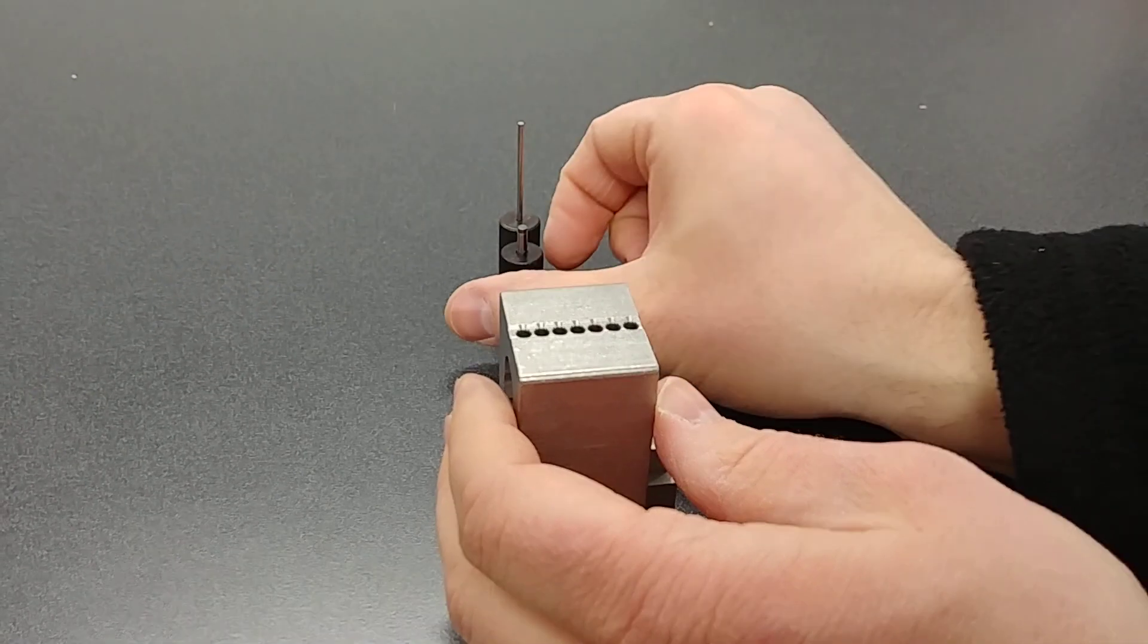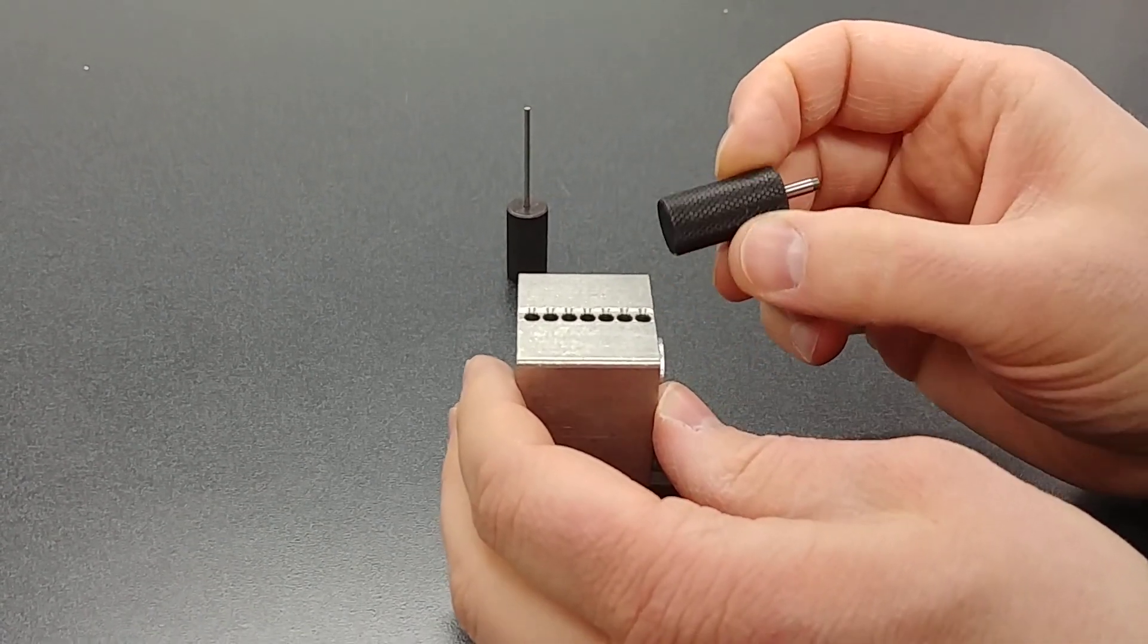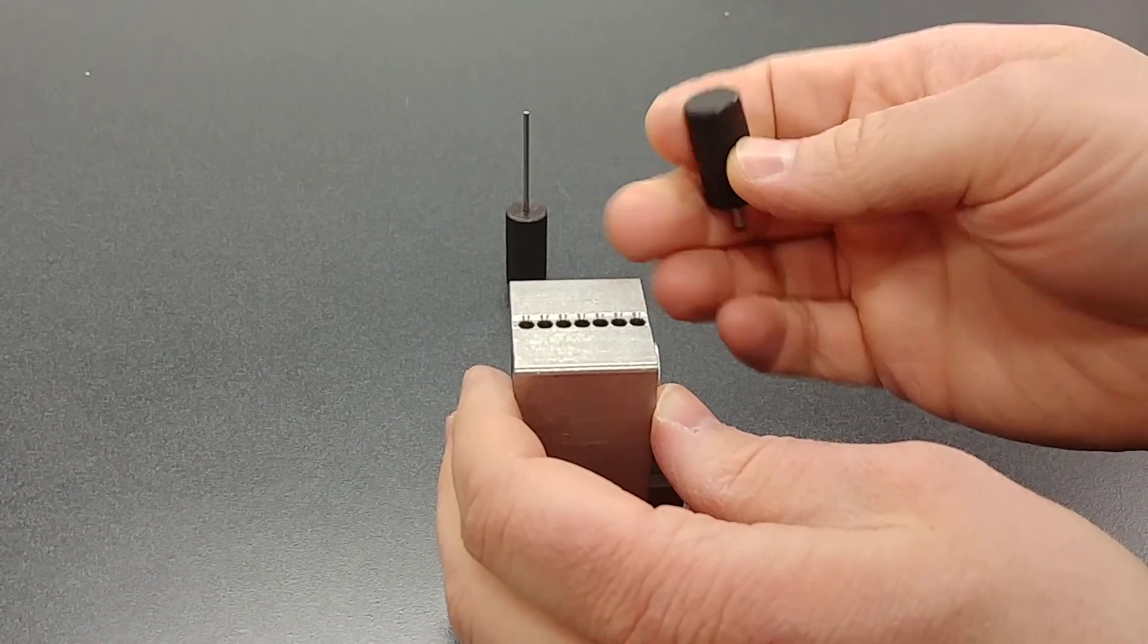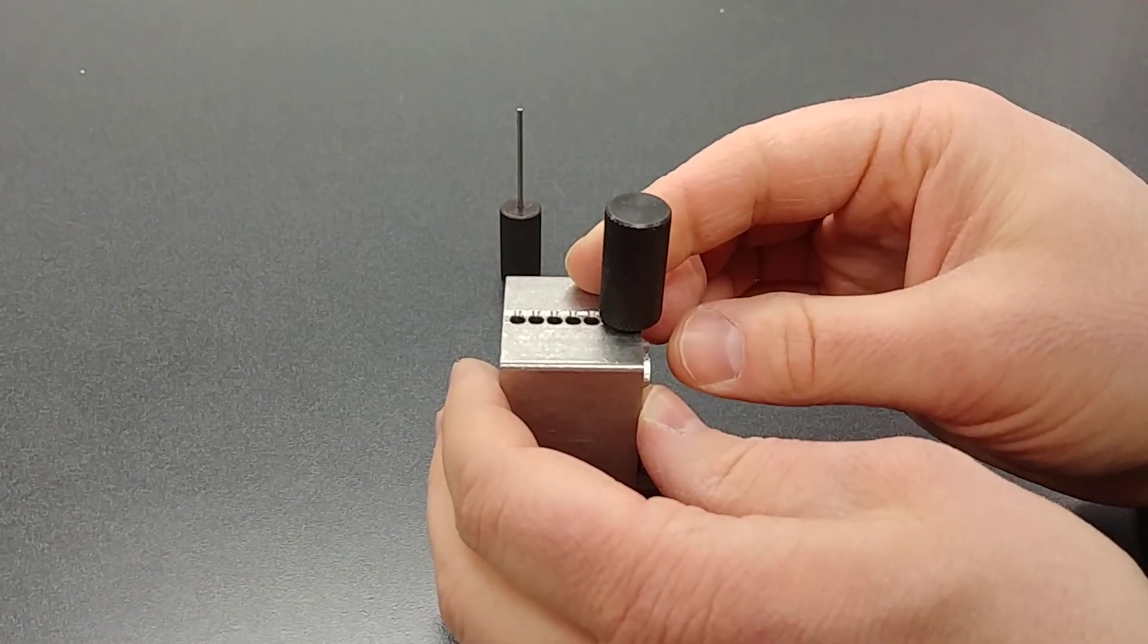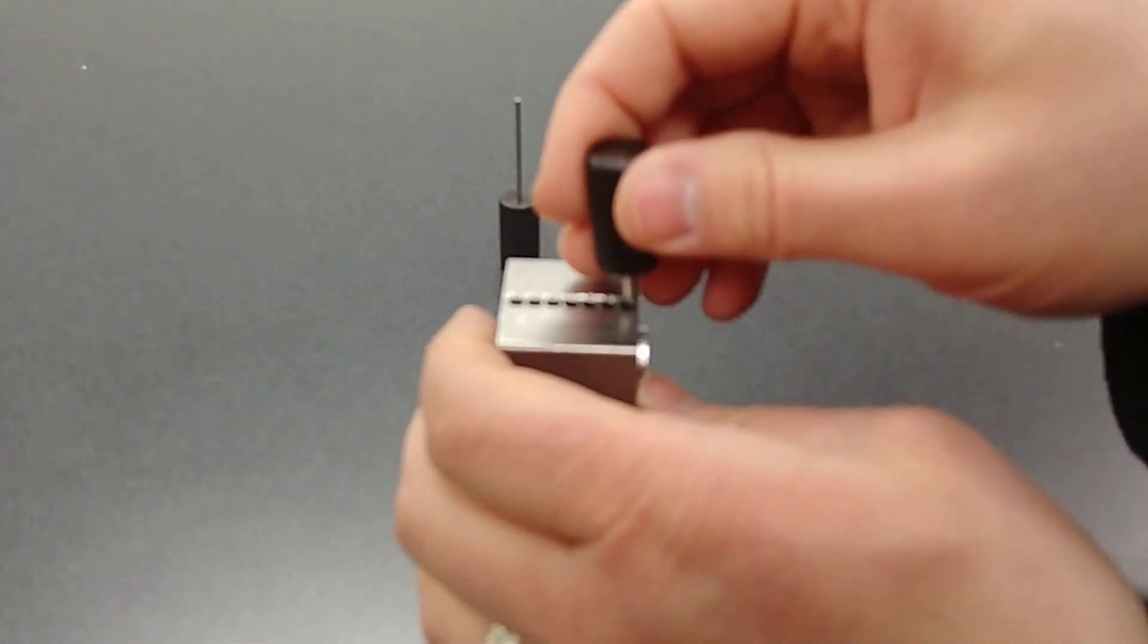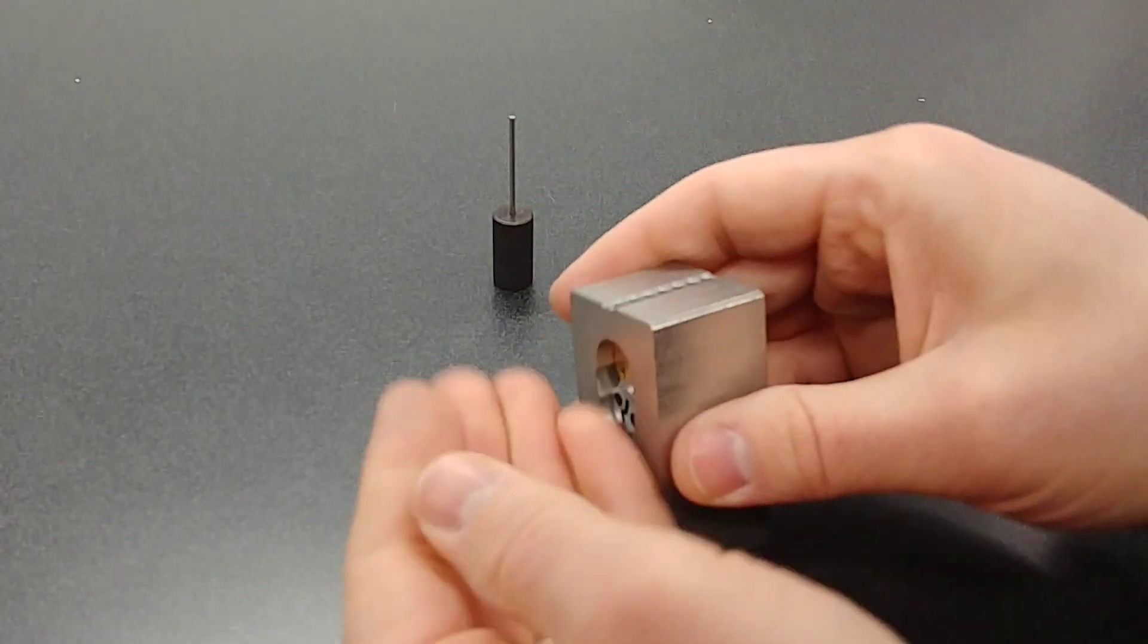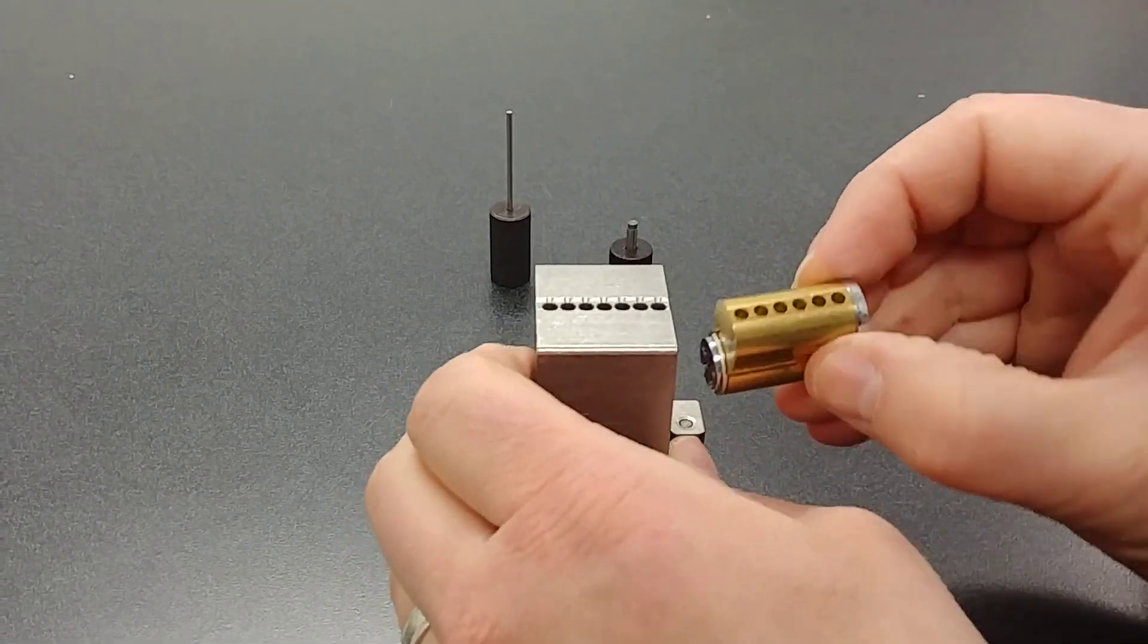And then you'll take your capper here, which by the way, both of these, the capper and ejector are sold separately, and you'll stick it on top like this. Then you'll take a hammer or a rubber mallet, and you're just going to whack it real quick. When you whack it, it's just going to make a really nice straight cap on this cylinder here.